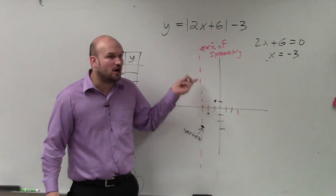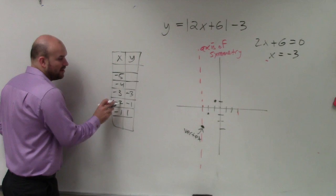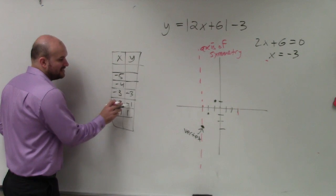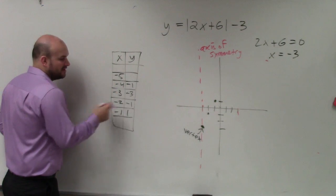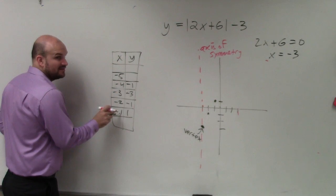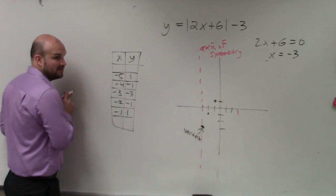So rather than plugging in all these numbers, if I know that a point directly one unit to the right is negative 1, then guess what? The point one unit to the left is also negative 1. If I know the point two units to the right of the axis of symmetry is 1, then the point two units to the left is also going to be 1.